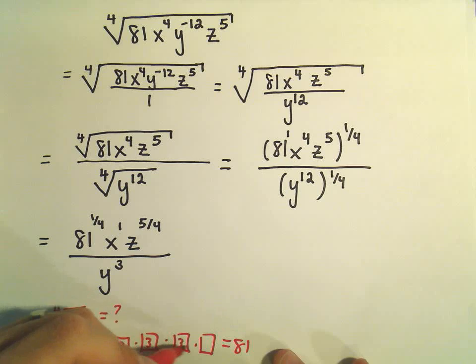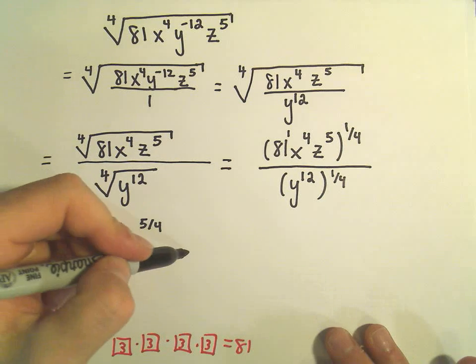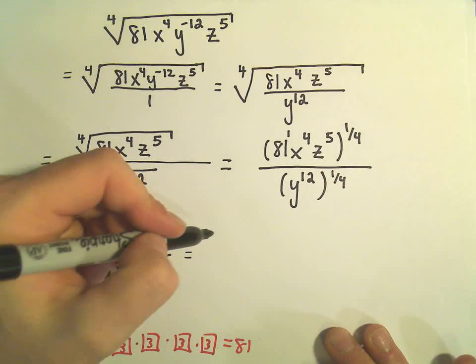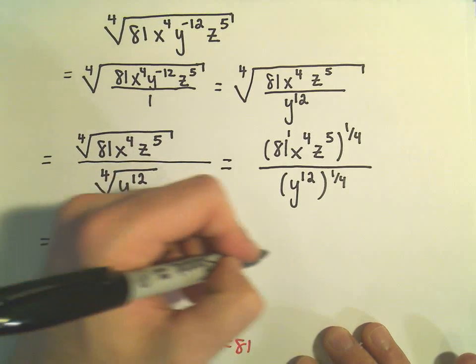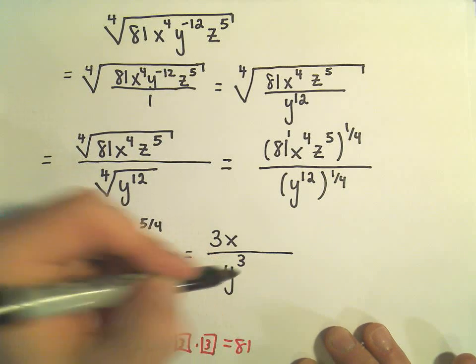Well, I think three is the number that does that. If you take three to the fourth, we get 81. Therefore the fourth root of 81 is three. My x to the first, I'm just going to write as x. We'll come back to the z in just a second. Y to the third is okay.